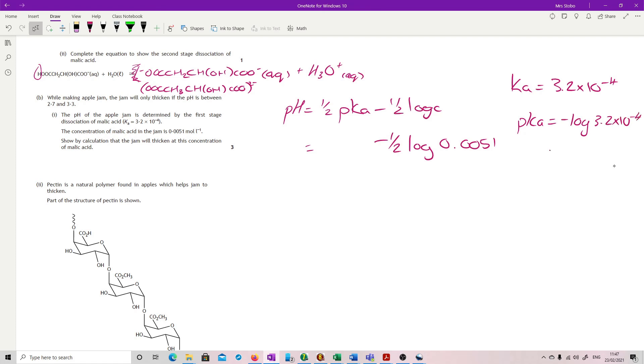So that gives me 3.495, which I'm going to take at 3.5. And I'm going to plug this in here. So a half of 3.5. Plug all that into my calculator using brackets and everything. Gives me 2.896. So round that to 2.9. 2.9 is between 2.7 and 3.3. So therefore it will thicken.